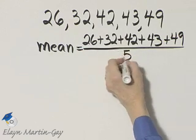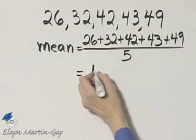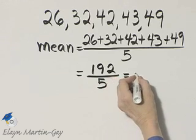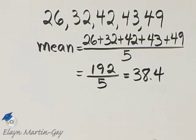One, two, three, four, five. The mean then is, if you find the sum of these numbers, it's 192. Divide that by 5, and you'll have 38.4. That's the mean.